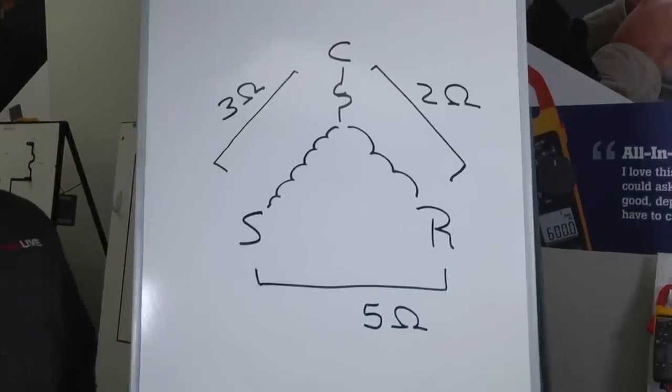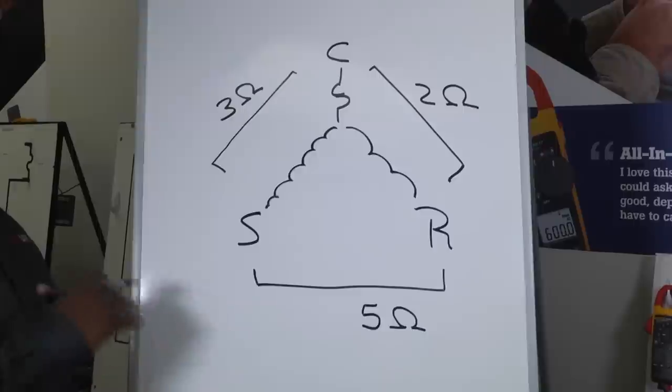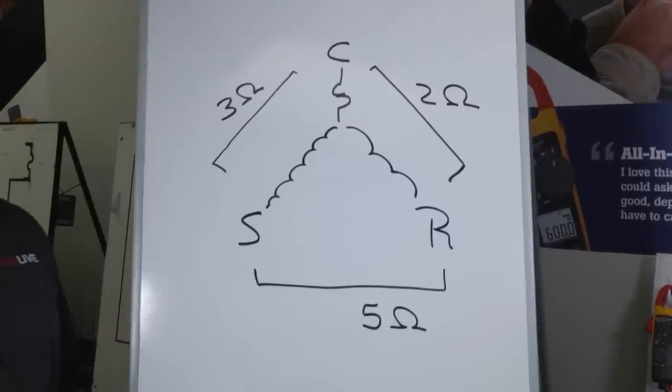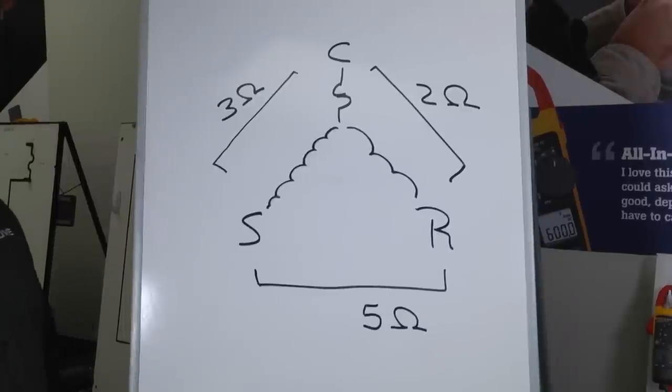So that's gonna tell us whether or not we can get from point A to point B, or in this case C to R. And all we're looking for is if that path is broken in any way. If that path is broken we'll see some different things on our meter.